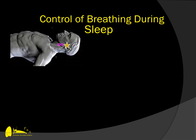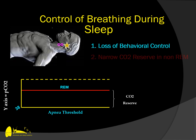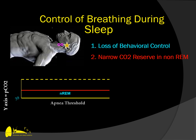What happens to our respiratory drive when we fall asleep? The first item to be aware of is that we lose our behavioral control, and we are now relying on physiologic parameters and our central control. During sleep, we also have sleep stage-dependent issues. The CO2 reserve will be more widened in REM sleep, and during non-REM sleep this CO2 reserve will narrow, making us more susceptible to apnea because of the short distance from the CO2 of 40 to the apnea threshold, which in non-REM sleep may be higher than 36, perhaps even 39.